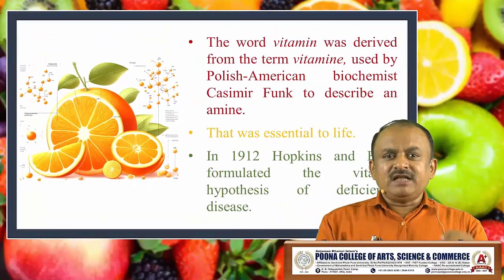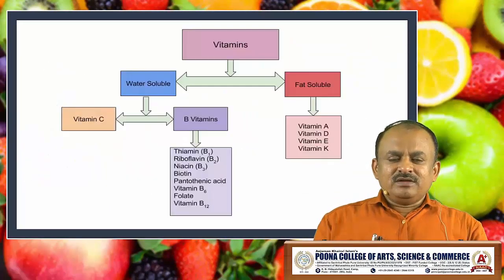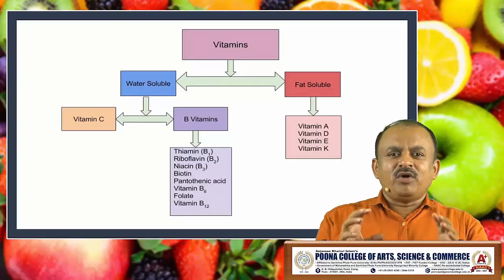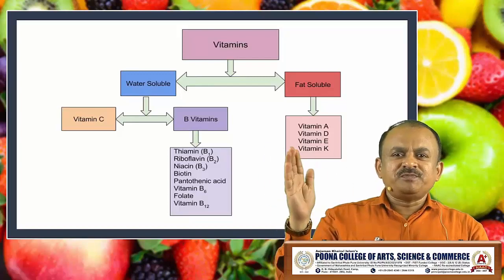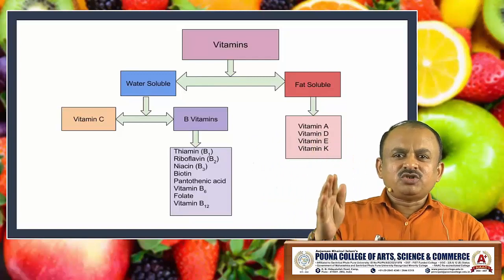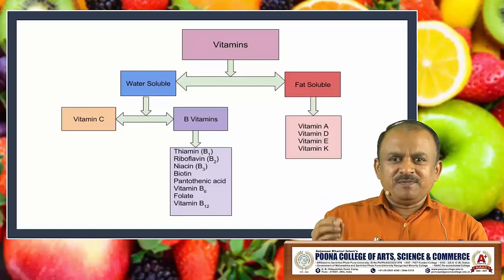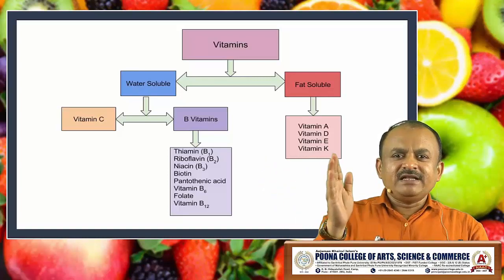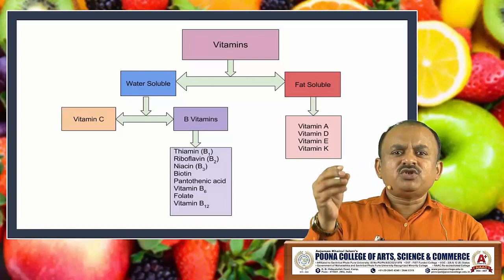In this chart, it is clearly pointed out that vitamins are categorized into two different groups. The first is water soluble and the second is fat soluble. Water soluble vitamins are grouped into two different types: the first is vitamin C and the second is B vitamins. Most of the time we call B vitamins as B complex or the vitamin B series.